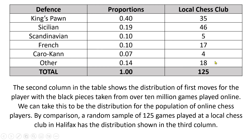In this third column, we're imagining we went to a local chess club, randomly selected 125 games, and counted the number of games in which each defense was played. This data is actually made up, unlike the second column — those proportions actually came from a website. The local chess club data I just made up.